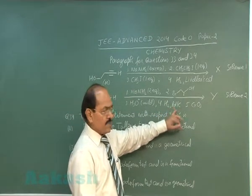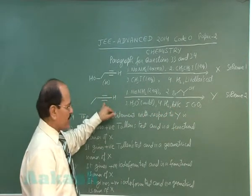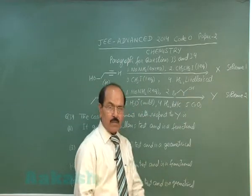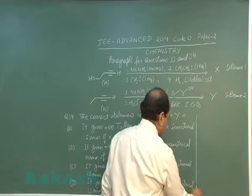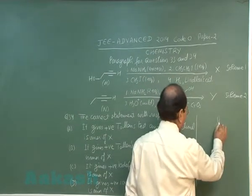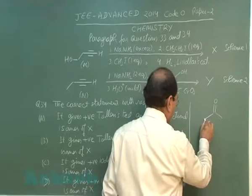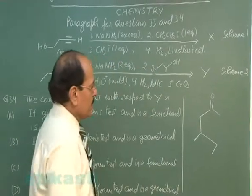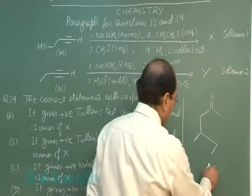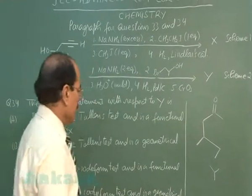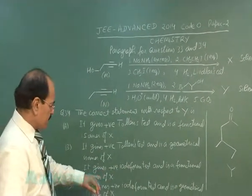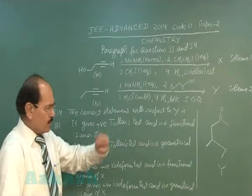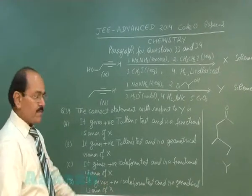Hydrogen in the presence of palladized charcoal reduces the alkyne to an alkane. Chromium trioxide oxidizes the secondary alcohol to a ketone. Finally, this gives rise to product Y, which gives a positive iodoform test because of the methyl group attached to the carbonyl group, and it is a functional isomer of X.